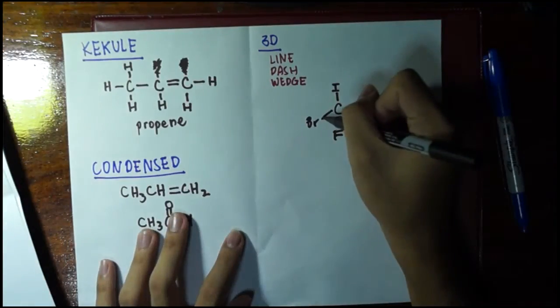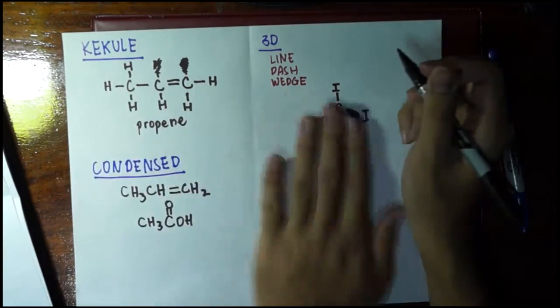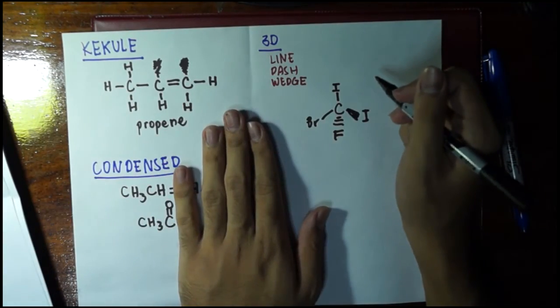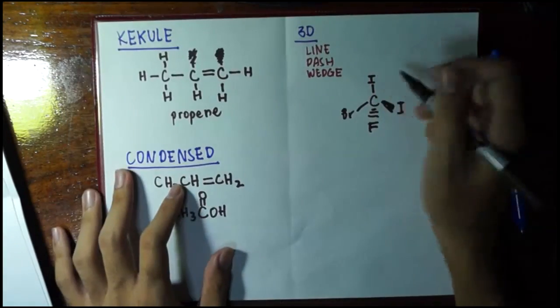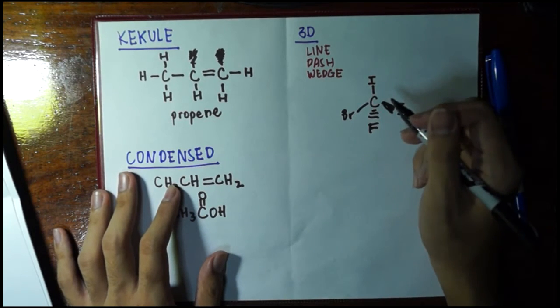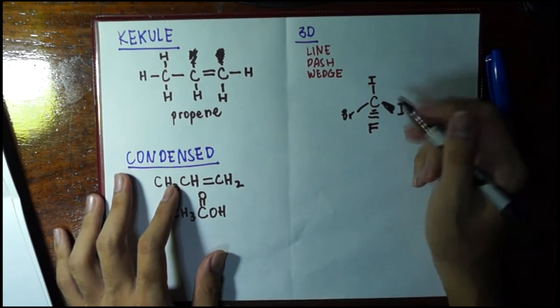And this line—it's as if this bond is in the plane of the paper. It's not facing you, not facing away from you, just at the plane of the paper. We will use this 3D formula later on.